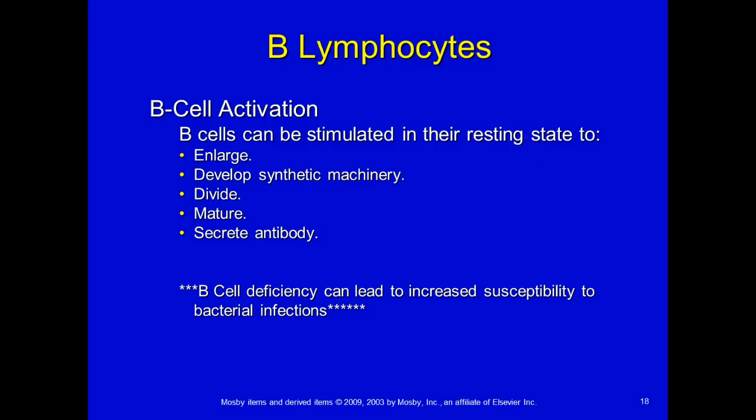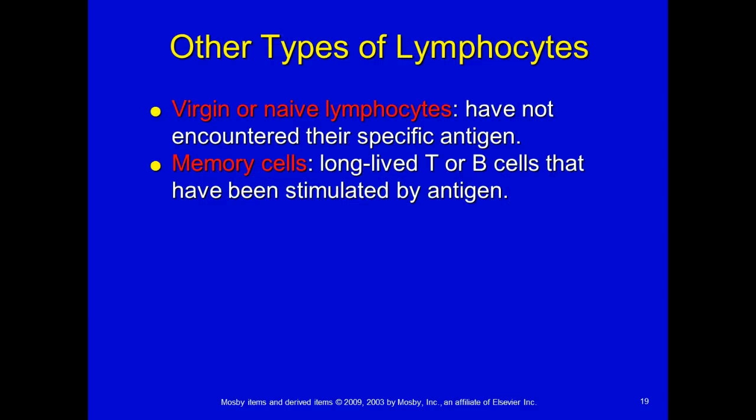B cells can be stimulated from their resting state to become larger, develop machinery, divide, mature, and secrete antibodies. B cell deficiency can result from bacterial infections. Virgin or naive lymphocytes have not yet encountered their specific antigen — they're just floating around waiting. Memory cells are long-lived T or B cells that have been stimulated by an antigen. For example, after a vaccination, you would have memory cells that help memorize that vaccine.